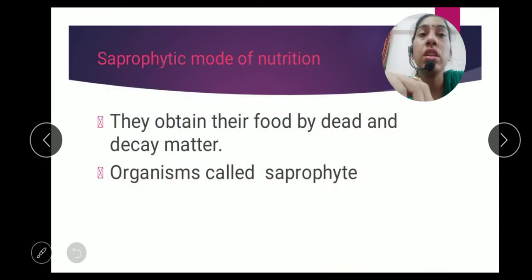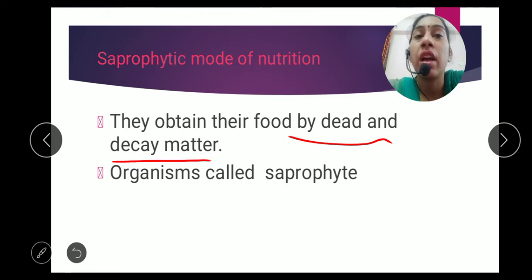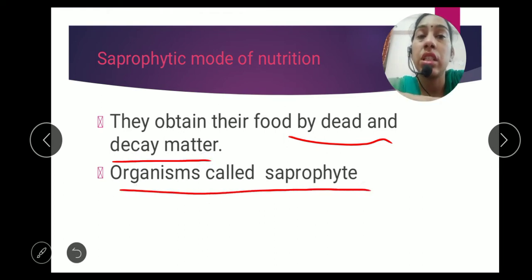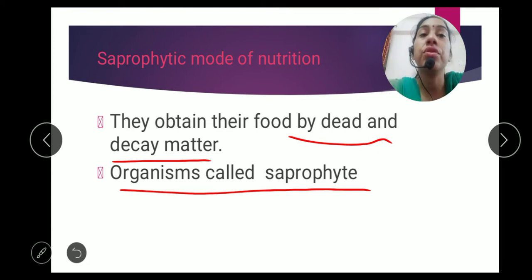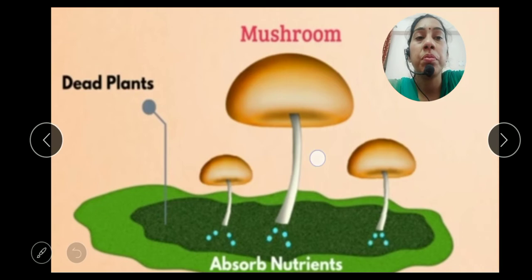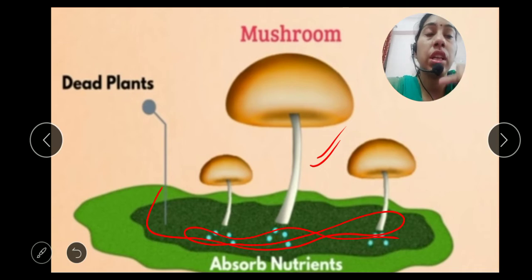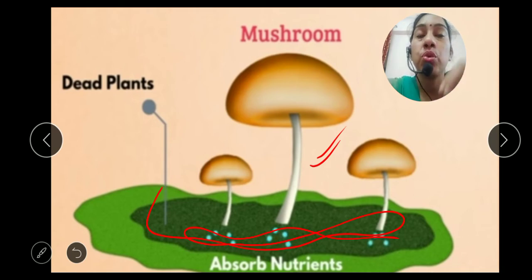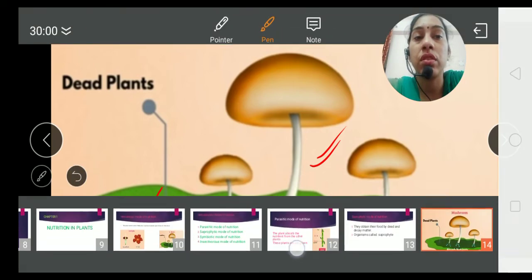Saprophytic mode of nutrition means the plant gets its food from dead and decaying matter. For example, mushrooms always grow in dirty places — places where there are dead plants and dead animals. They grow because they take their food from those dead plants and dead animals and absorb nutrition from them.